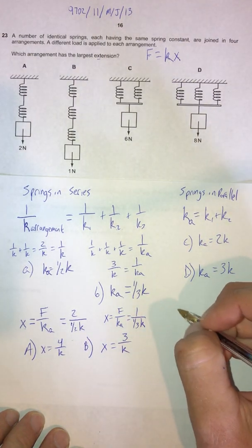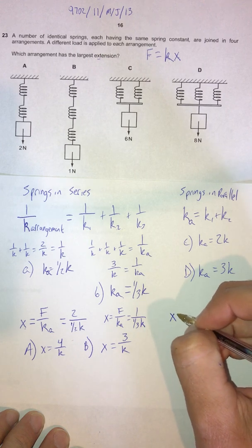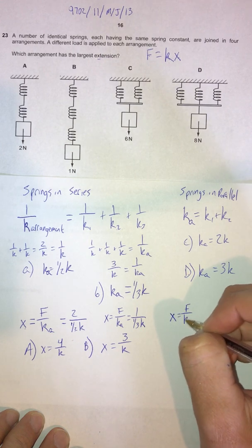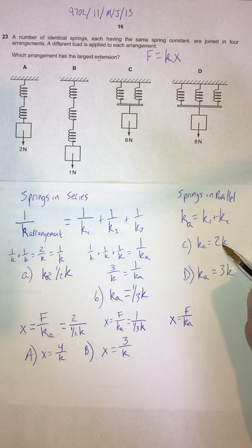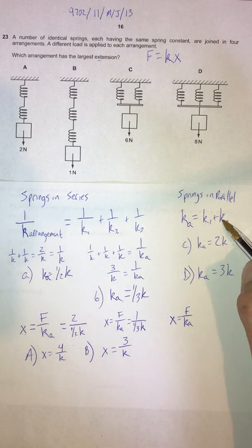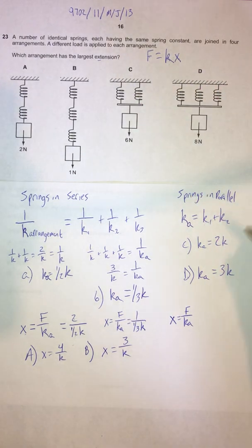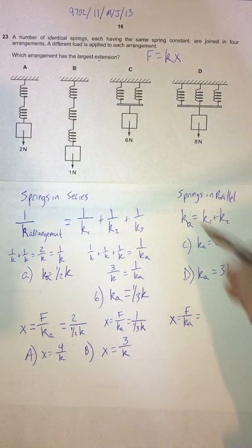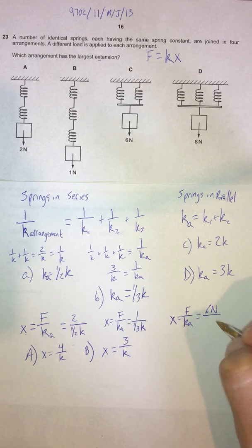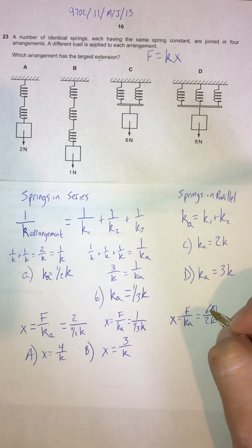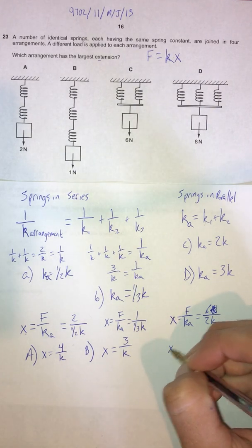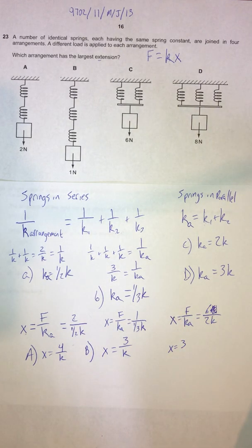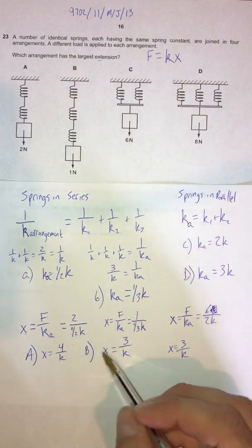For choice C, applying Hooke's law: x = F / k_arrangement. The arrangement spring constant is 2k for two springs in parallel, and the force is 6 N, so x = 6 / 2k = 3/k. Interestingly, that's the same extension as choice B.